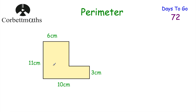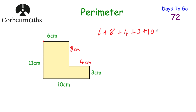This time we've got an L-shape. To find the perimeter, first find the missing sides. The full width is 10 cm and one part is 6 cm, so the missing horizontal length is 4 cm. The full height is 11 cm and one part is 3 cm, so the missing vertical length is 8 cm. Adding all sides: 6 + 8 + 4 + 3 + 10 + 11 = 42. The perimeter of this L-shape is 42 centimetres.